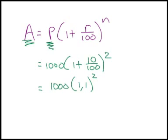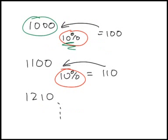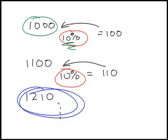Let me just show you what I've done. 1 plus 10 over 100 gives me 1.1, to the power of 2. What is 1.1 to the power of 2? I don't have a scientific calculator, so just say 1.1 times by 1.1. That gives 1.21, times by 1,000 — gives 1,210. Which is exactly what we got there, after 2 years.